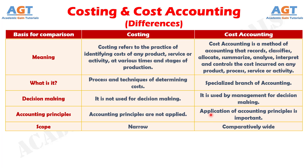To sum up, we can say that cost accounting gives us the basis and relevant information required for determining the cost of production. And when that information is at hand, the costing process is undertaken arithmetically by using periodical statements or integral accounting. So these are the differences between costing and cost accounting. If this lecture was helpful, give it a thumbs up and subscribe to the channel. Thank you.